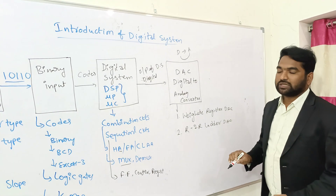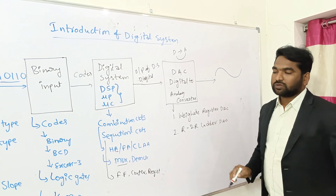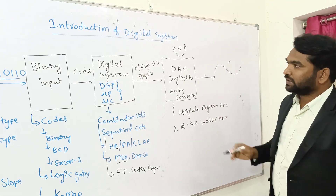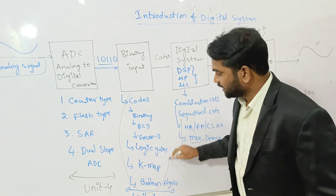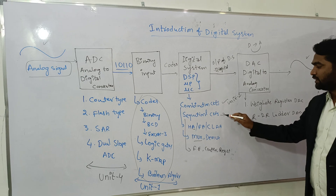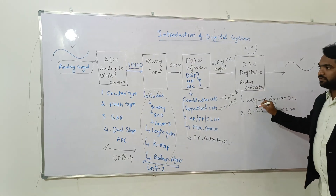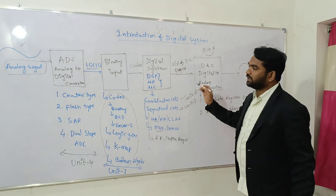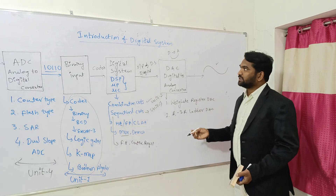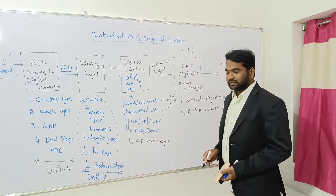So the digital system block diagram maps directly to the syllabus: codes and basics are learned in unit 1, combinational circuits in unit 2, sequential circuits in unit 3, ADC and DAC in unit 4, and data storage — how to store and erase data — in unit 5. This is called the digital system. Indirectly, we are learning a simple block diagram of digital electronics. Thanks for watching, please do subscribe.